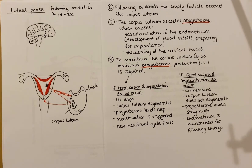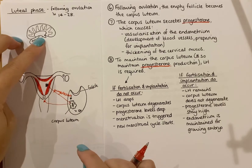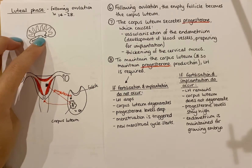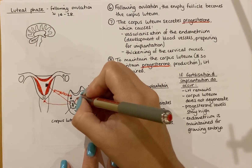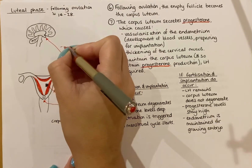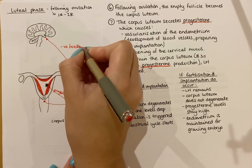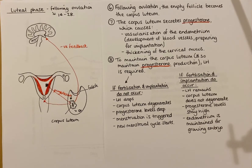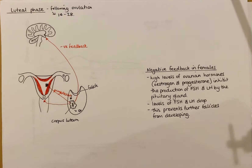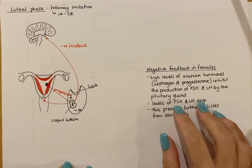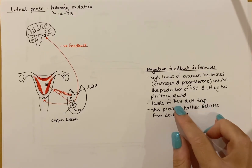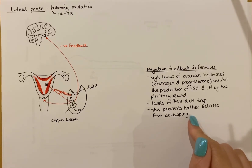As with males, females have negative feedback as well. If the female is pregnant and fertilization and implantation have occurred, you do not want the pituitary gland to produce any more FSH and LH, because you do not want more follicles to be produced and ovulated, which could potentially result in another pregnancy. So progesterone and oestrogen travel to the pituitary gland and inhibit it — this is negative feedback — reducing the amount of FSH and LH being produced. If LH and FSH decrease, no more follicles are stimulated to develop and no more ova will mature, preventing another pregnancy at the same time.